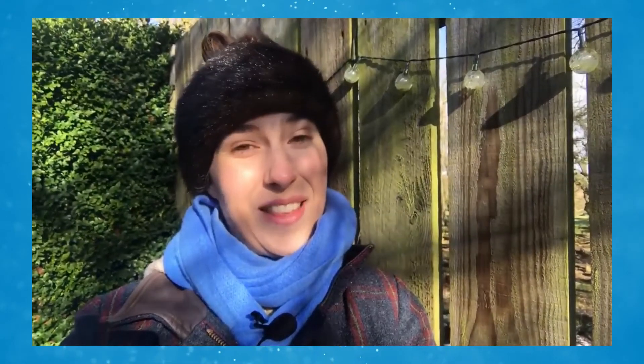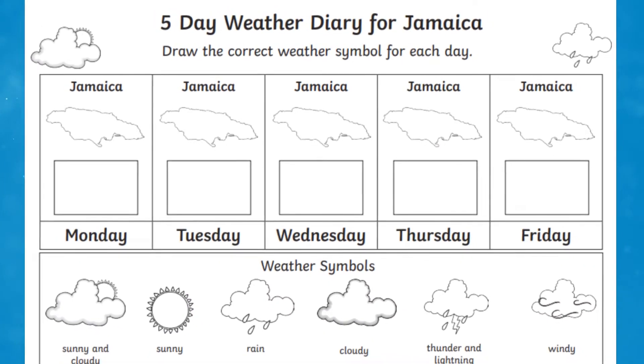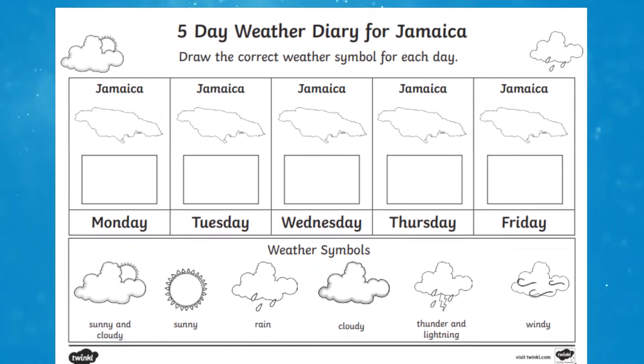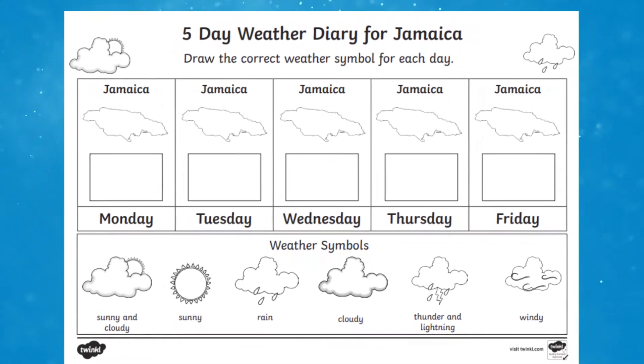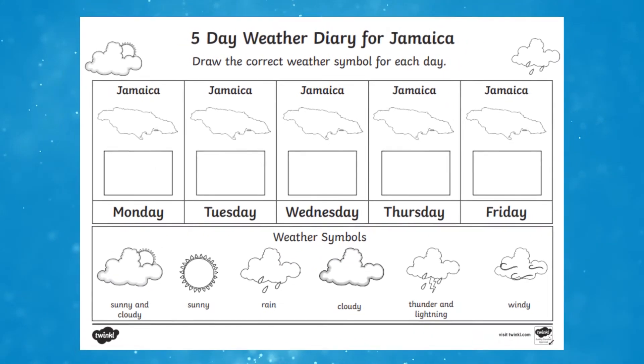Finally, if learners are hooked on learning about the weather from around the world, get them to use the internet to track the weather in different countries. For example, they might be interested in Jamaican weather and could track it using our five-day weather diary for Jamaica.